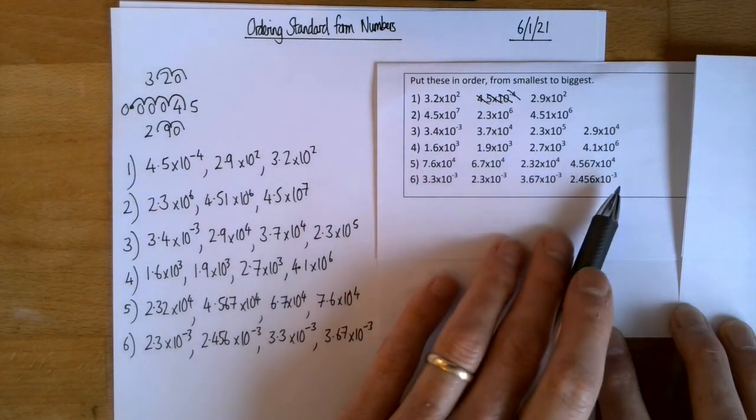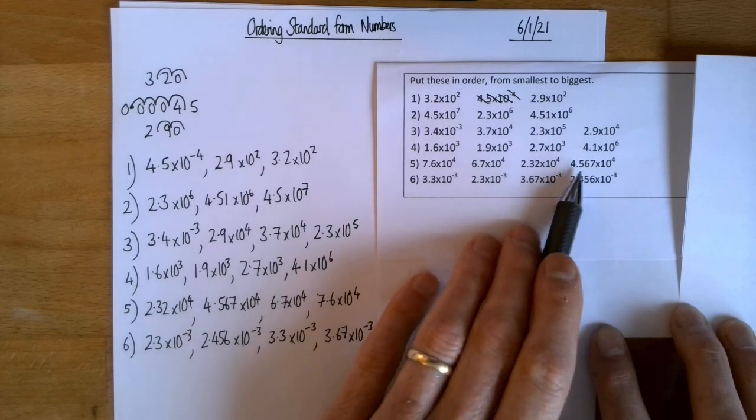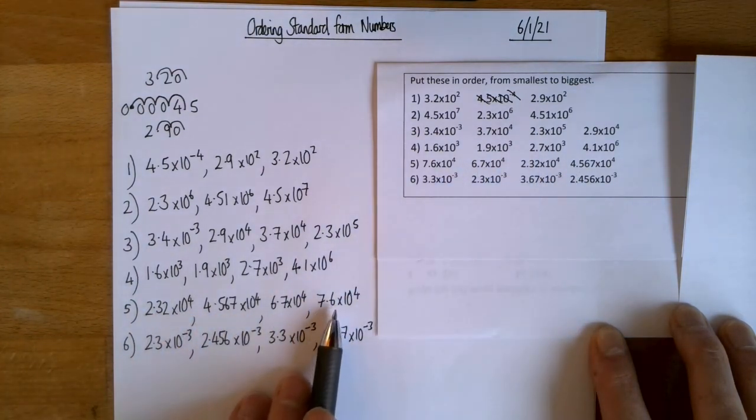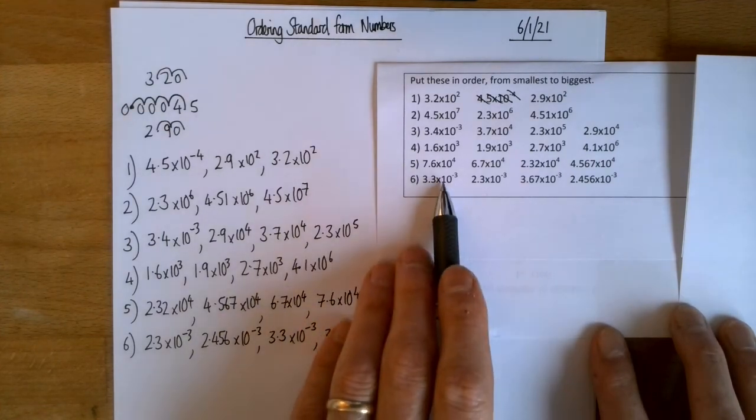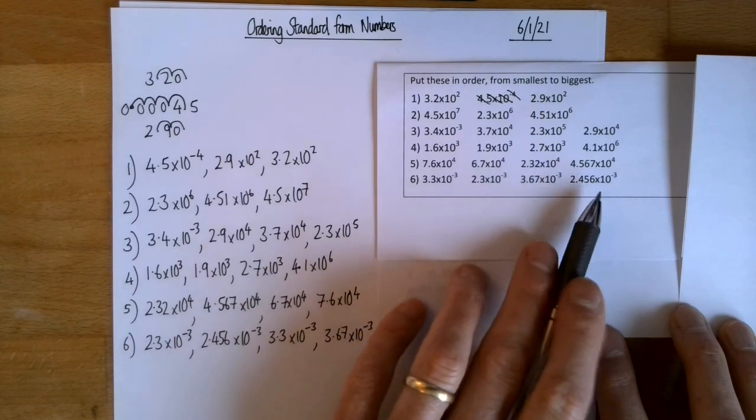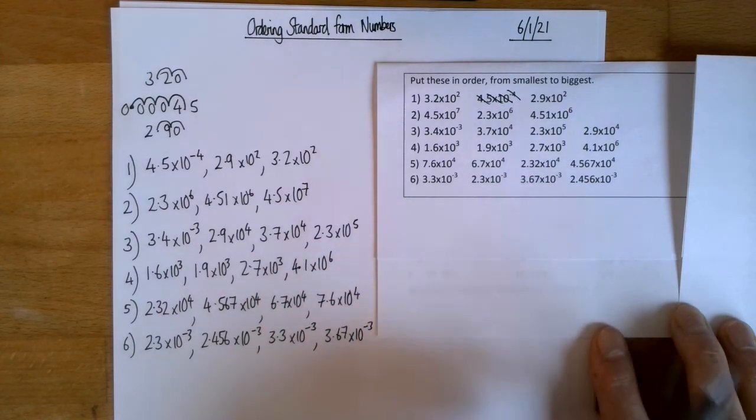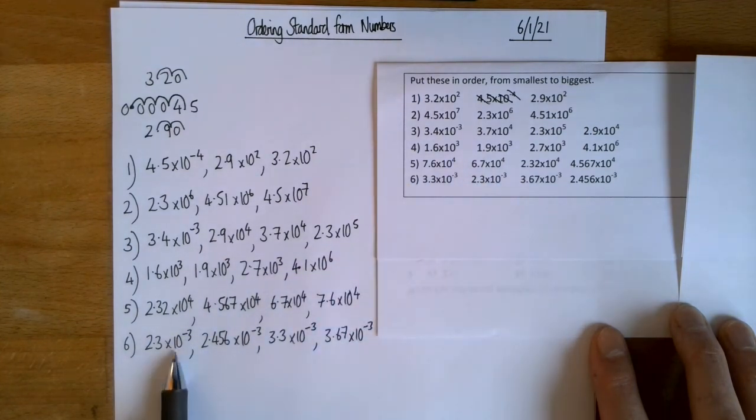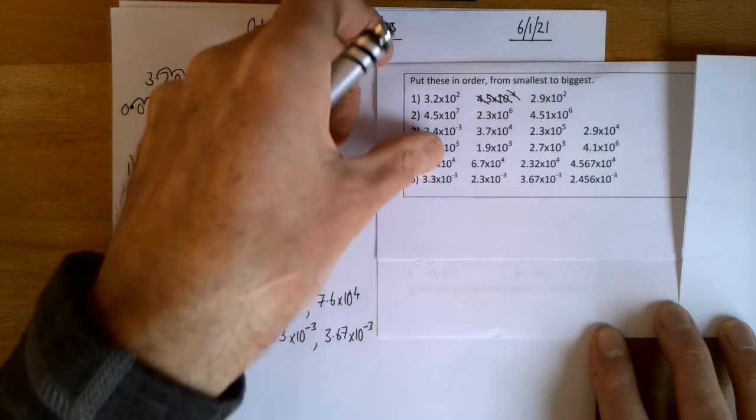And for 5, they were all 10 to the power of 4. So I just looked at the number between 1 and 10 and put those in order. I'm sort of assuming that ordering decimals is something you're confident with. And similarly, 6, they were all 10 to the power of minus 3. So these are all tiny numbers. But which is the smallest? Well, we have to look at the number between 1 and 10. So that's the smallest. And then we work our way up. So hopefully you were OK with that.